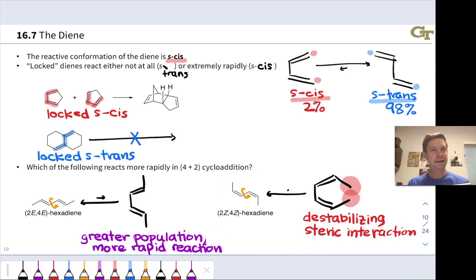Because of the greater population of the S-cis conformer in the left-hand compound, we would expect more rapid reaction. In a sense, there is a greater concentration of the reactant, right? Since the reactive conformation is actually this one in the left case with the E-E hexadiene as opposed to the right case with the Z-Z hexadiene. And so the left-hand structure will react more rapidly in 4 plus 2 cycloaddition.